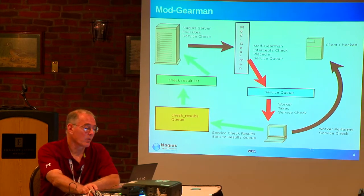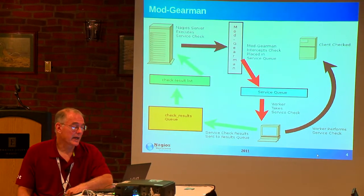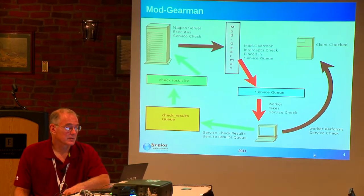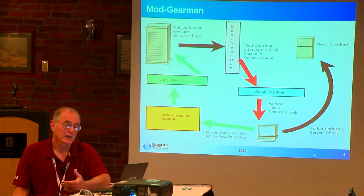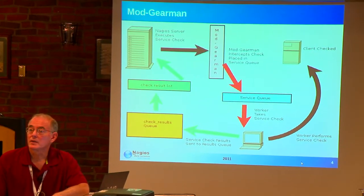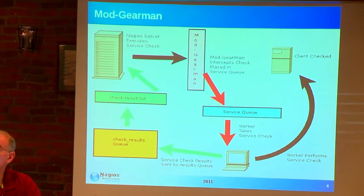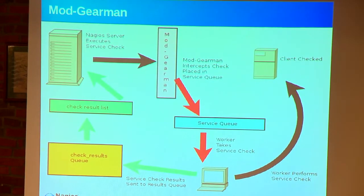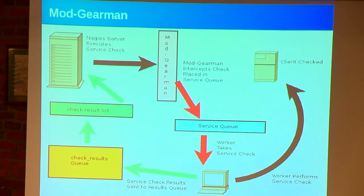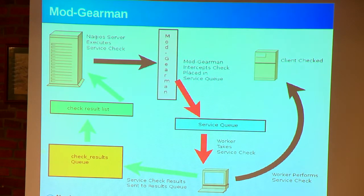Here's kind of the way that it works. You can see that Nagios executes a service check, and then Mod Gearman intercepts that and it goes to a queue. In that queue, a worker says it's available, picks it up, executes that check, and sends it back to the check results queue. It's a pretty standard way to set things up and pretty easy to manage.